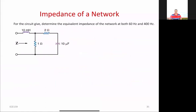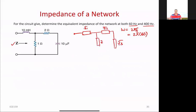Now a circuit is given to you that comprises not only resistors but also an inductor and a capacitor. You are asked to find the equivalent impedance of the whole network at two frequencies: 60 Hz and 400 Hz. The two frequencies will be used to find omega, which equals 2 pi times f — the angular frequency — so omega will be different for these two values. The units of omega are radians per second. We label the elements as Z1, Z2, Z3, and Z4.